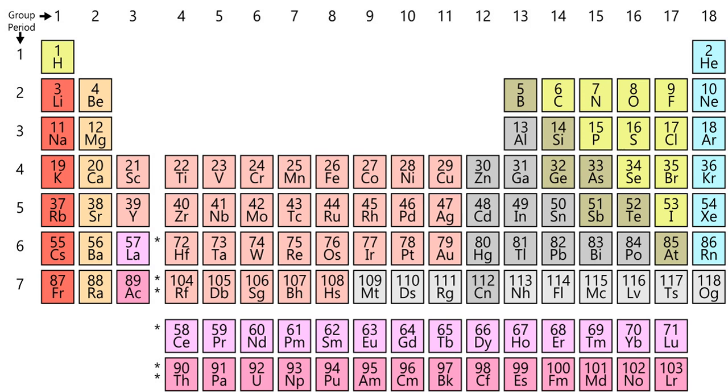The concept of an element as an undivisible substance has developed through three major historical phases: classical definitions such as those of the ancient Greeks, chemical definitions, and atomic definitions.